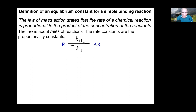The first thing to deal with is what an equilibrium constant is — something from high school chemistry or a first-year physical chemistry course for biologists, though experience has shown that people don't always remember it. It's defined by the law of mass action, an empirical law about the rates of reactions. It says that the rate of a chemical reaction is proportional to the product of the concentrations of the reactants, and the rate constants are the proportionality constants.